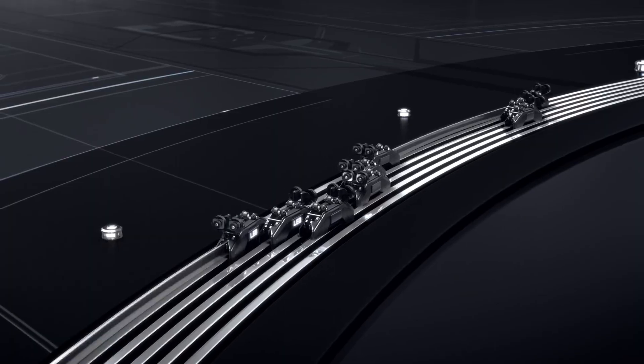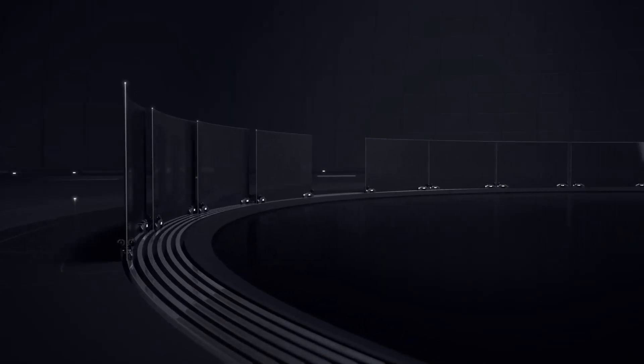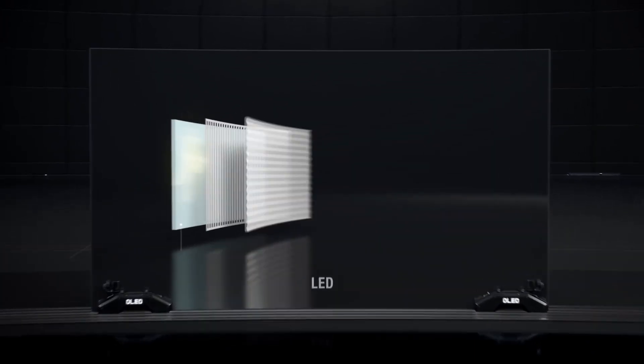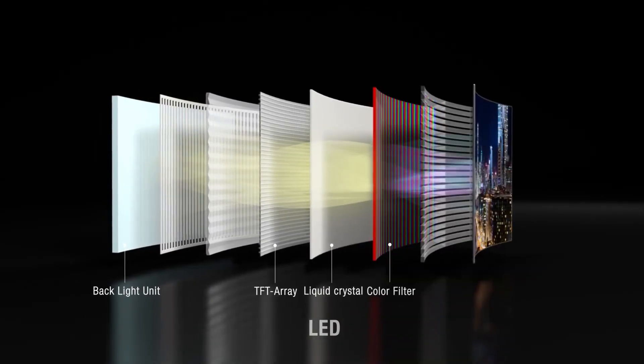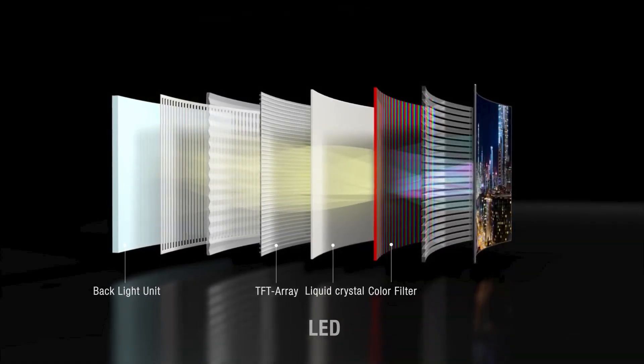So what is backlight bleed? To understand this we must first understand how an LCD panel is designed. LCD panels are made from numerous layers, one of which is a backlight. Some LCD monitors aren't overly adept at blocking, so the LCD's light source can creep through around the edges.